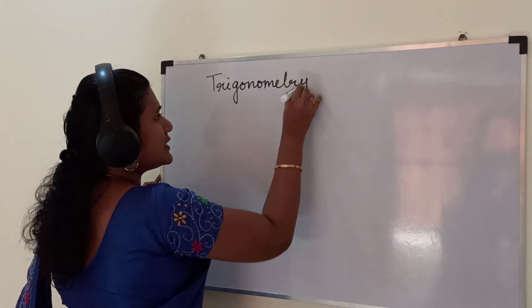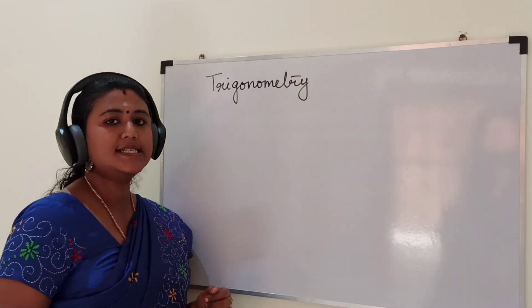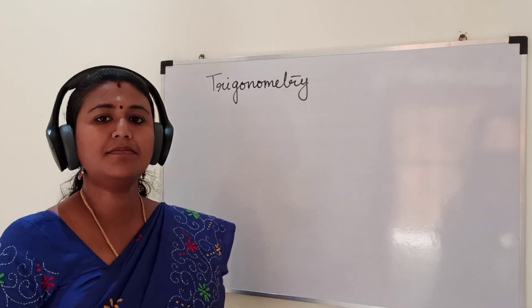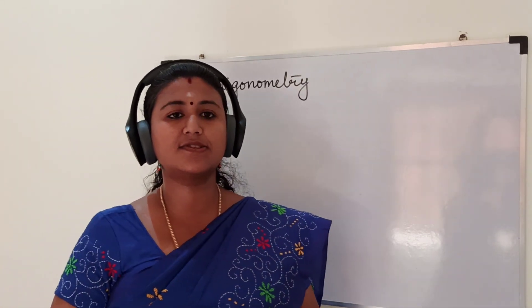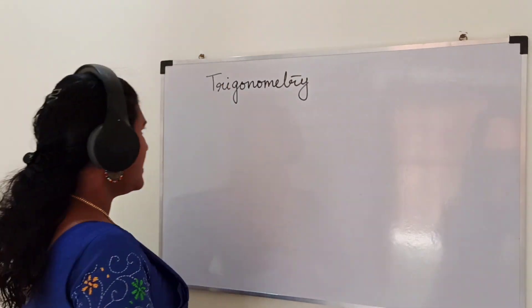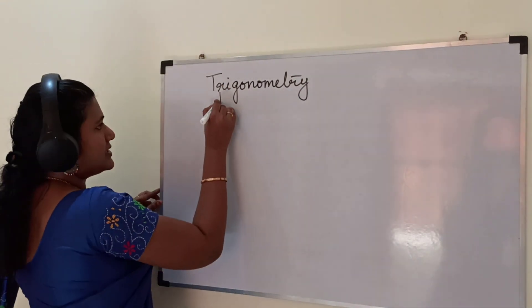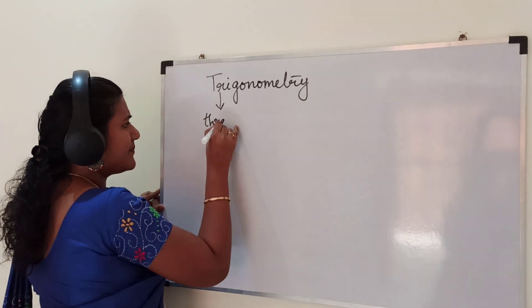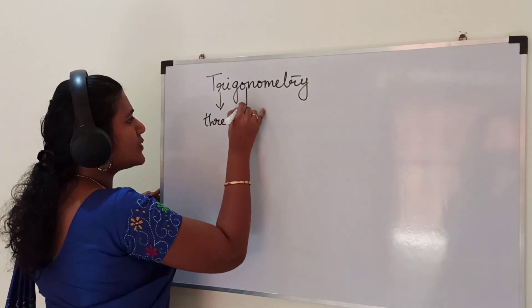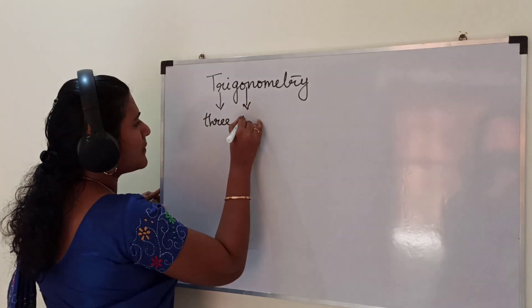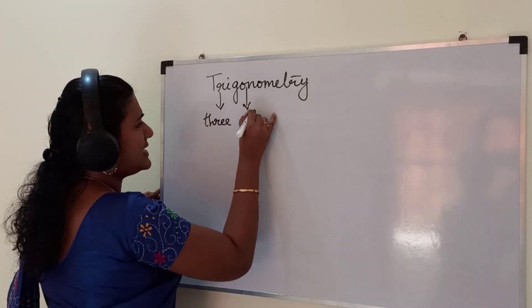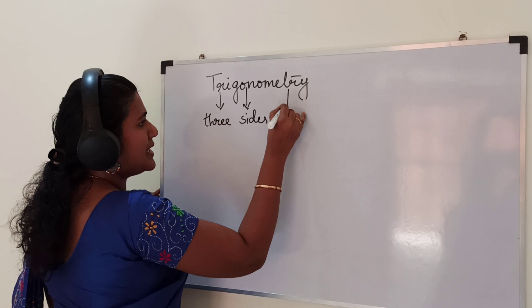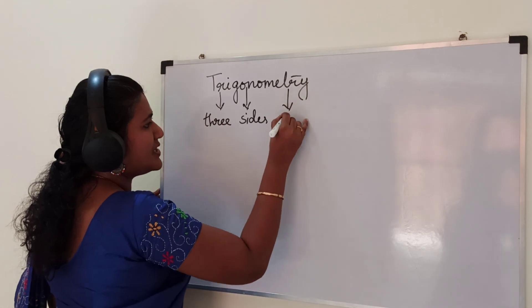The word trigonometry is derived from three Greek words: 'tri' meaning three, 'gon' meaning sides, and 'metric' meaning measures.